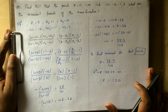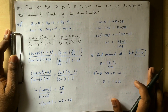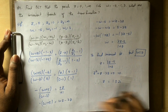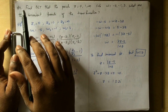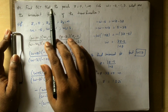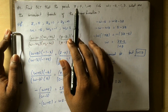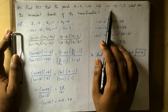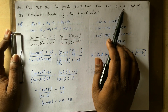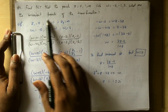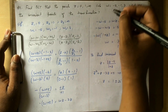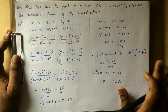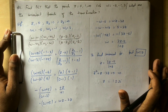Hi guys, so we are going to talk about bilinear transformation, second type of problem. Find the bilinear transformation that maps the points z = 0, 1, infinity into w = -5, -1, 3. What are the invariant points of the transformation?